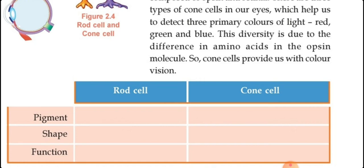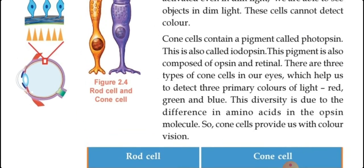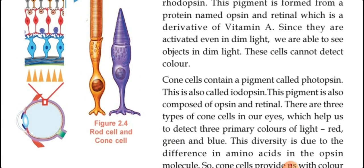So these are the points related to retina and photoreceptors: pigments, shape, and function. For rod cells — help to see in dim light; for cone cells — help to see in bright or intense light. And regarding the image: rod cells give black and white vision, cone cells give color vision. These are very important points, so don't forget them.